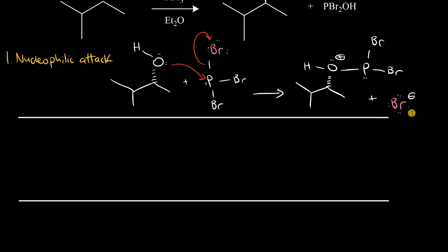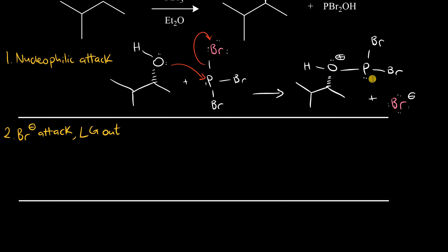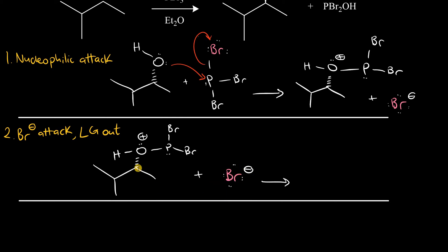In the second step, bromine can act as a nucleophile and attack this intermediate. PBr2OH is a very good leaving group, so upon front-side attack in a typical SN2 reaction, PBr2OH leaves the compound and establishes a neutral system. Bromine attacks from the front, causing inversion and the release of the leaving group, resulting in a substituted bromine on a wedge and PBr2OH.